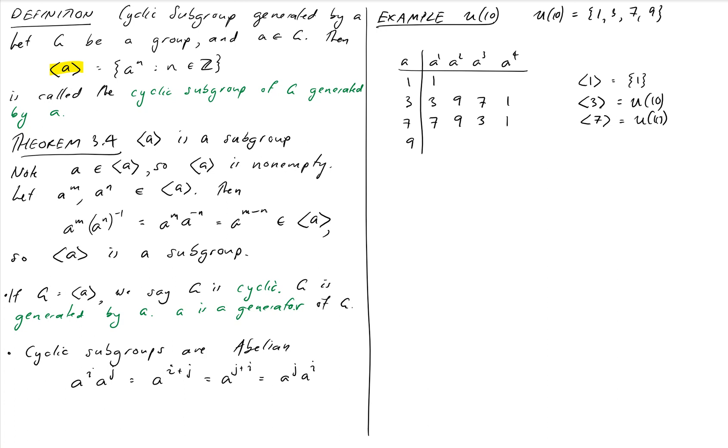What about 9? 9 by itself is just 9 and then 9 times 9 is 81 so we get back to 1. Notice if I multiply by 9 again I get back to 9, I'd repeat the pattern. So the cyclic subgroup generated by 9 is just the group including the members 1 and 9. That's all of the cyclic subgroups of U of 10.